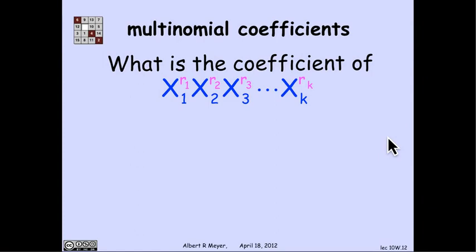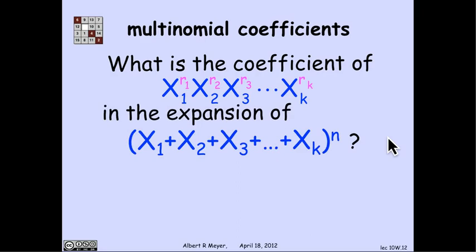More generally, this is what the multinomial theorem says. If I look at the coefficient of the term, a product of xᵢ to the rᵢ's in an expansion of a k-nomial, a sum of k distinct variables raised to the nth power, if I expanded this out using the distributive law without collecting terms, I'd have k to the n terms, each of which was a permutation of the x₁'s through xₖ's with repeats.